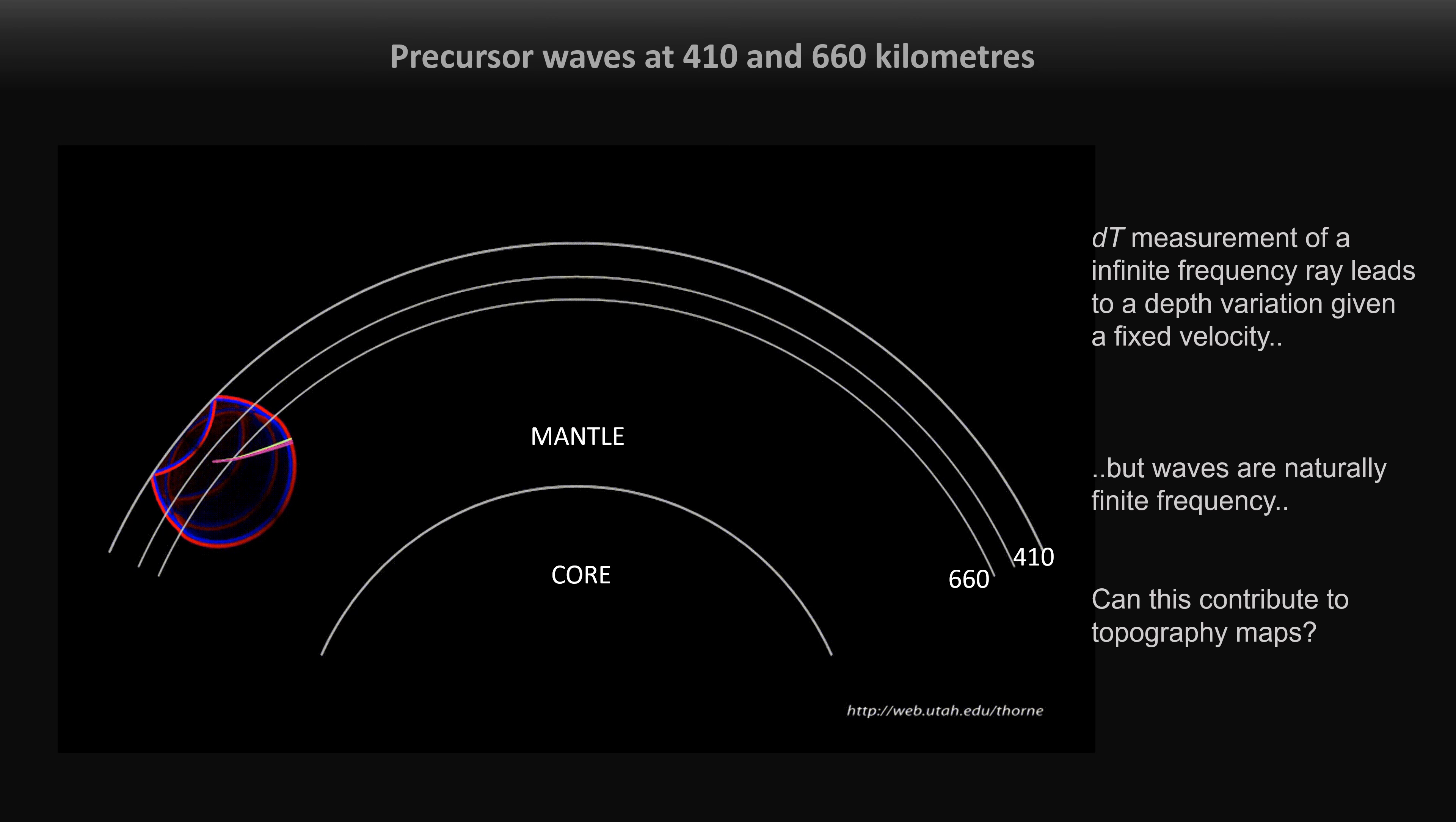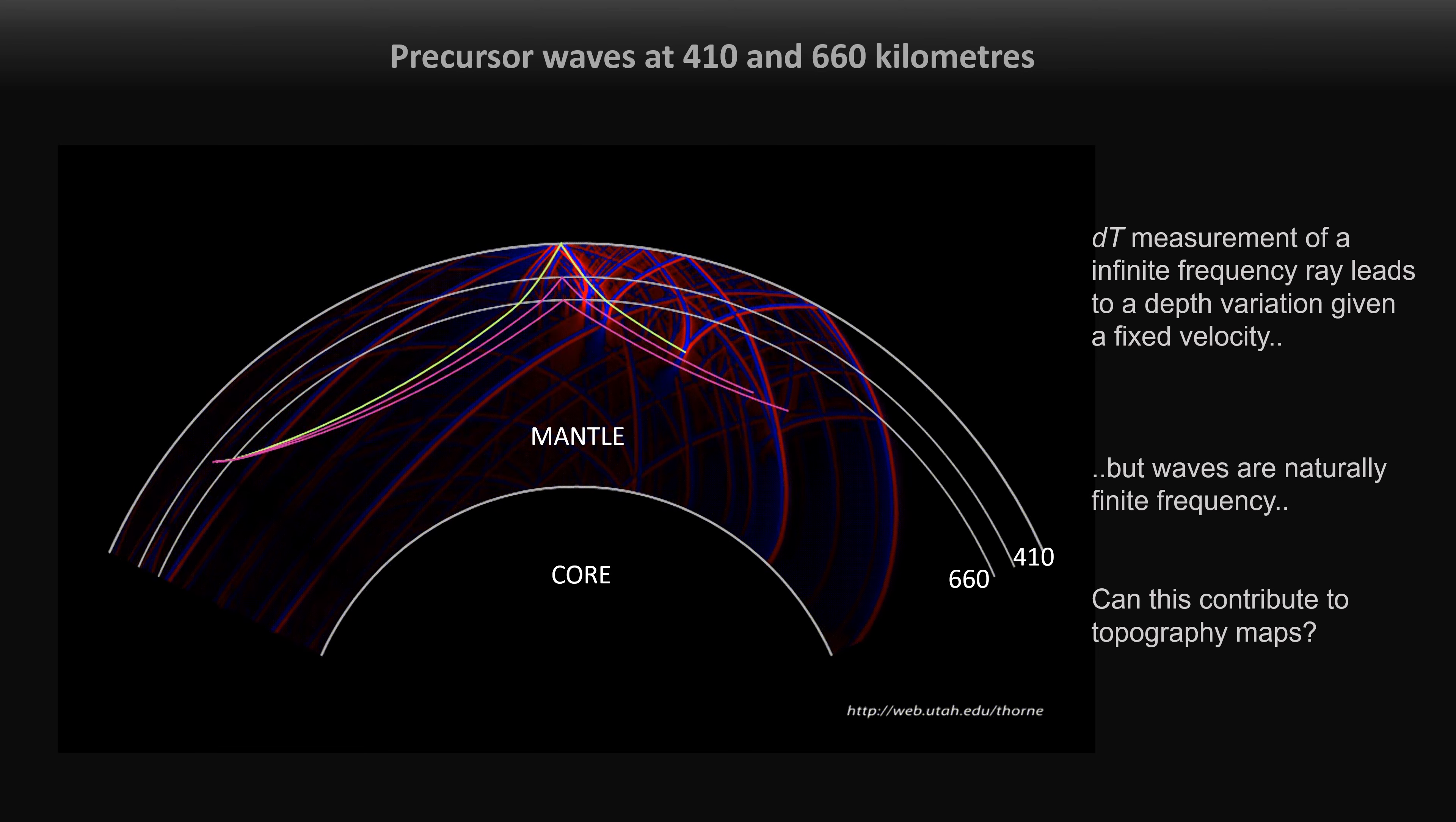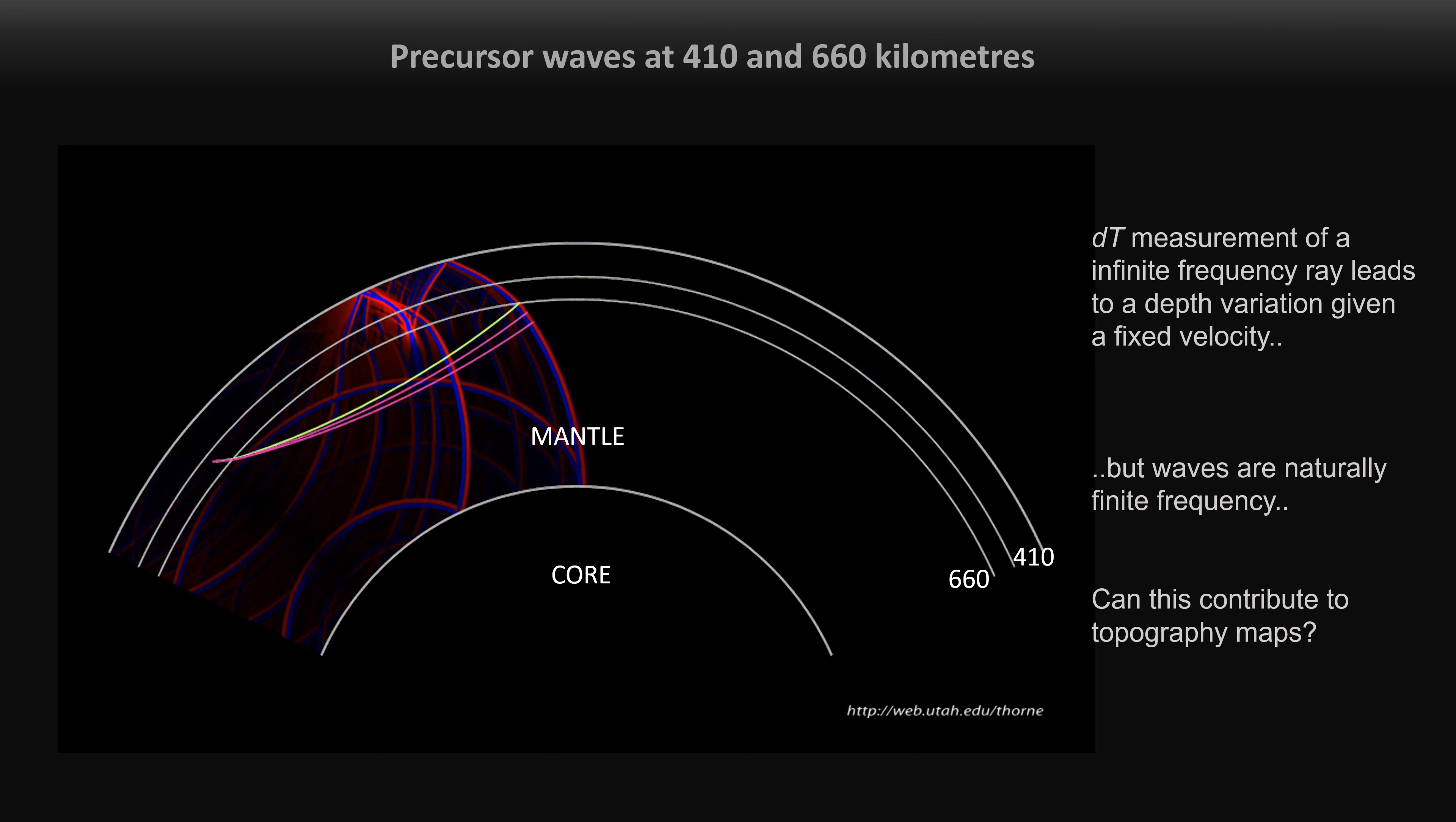Waves traveling inside the Earth interact with these layers at different points, so seismology can really help in creating accurate topography maps. Two seismic phases are really sensitive to the topography. They are known as SS precursors, and interact with the discontinuities as shown in this animation.